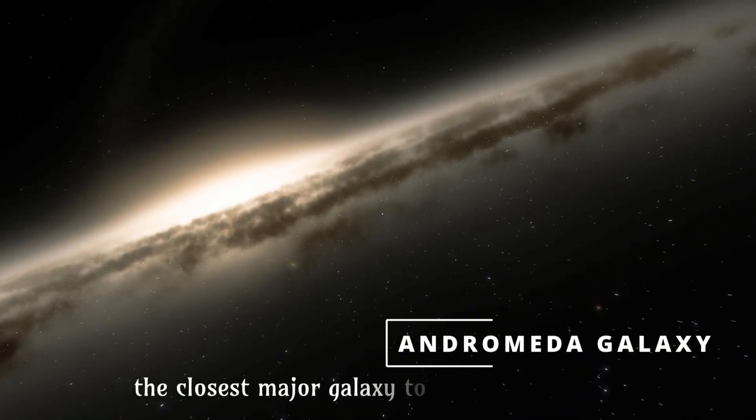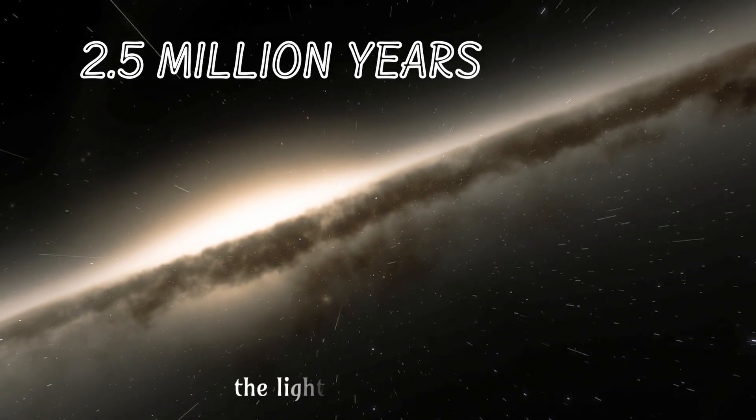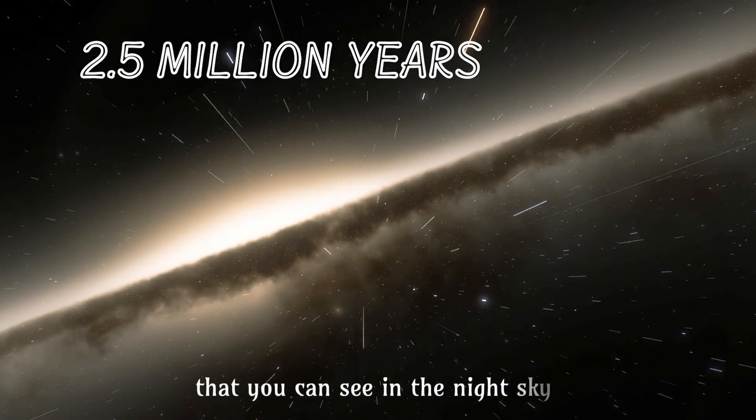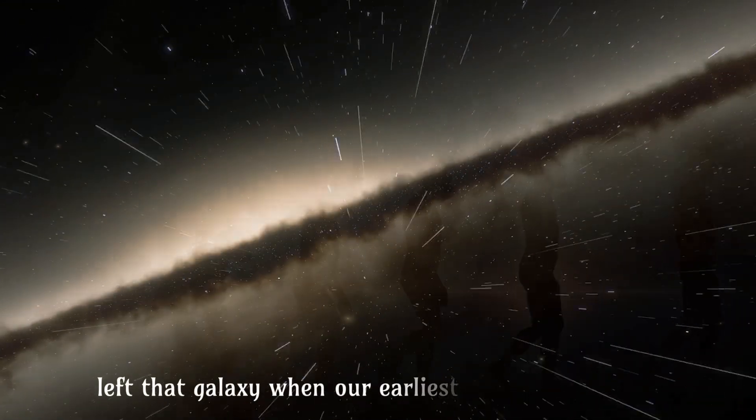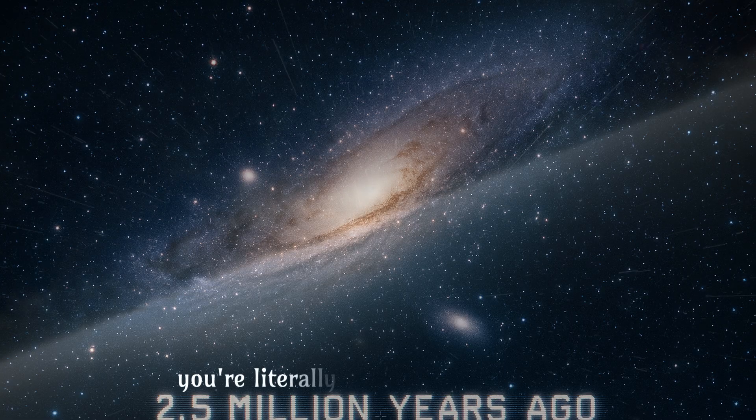The closest major galaxy to us is Andromeda. And light takes 2.5 million years to make that journey. The light from Andromeda that you can see in the night sky left that galaxy when our earliest human ancestors were just starting to walk upright. You're literally looking into the past.